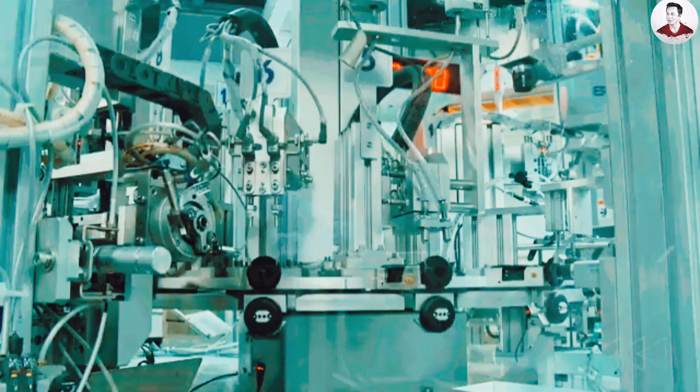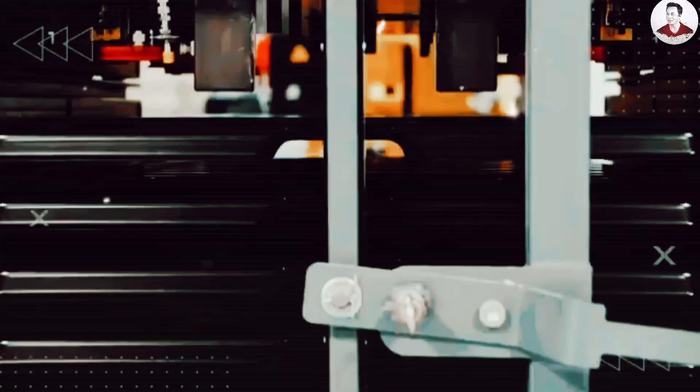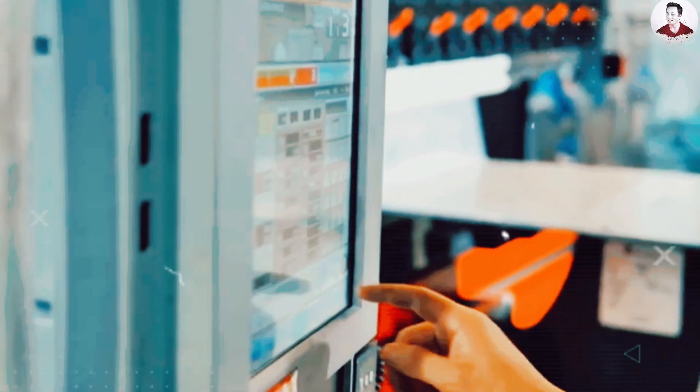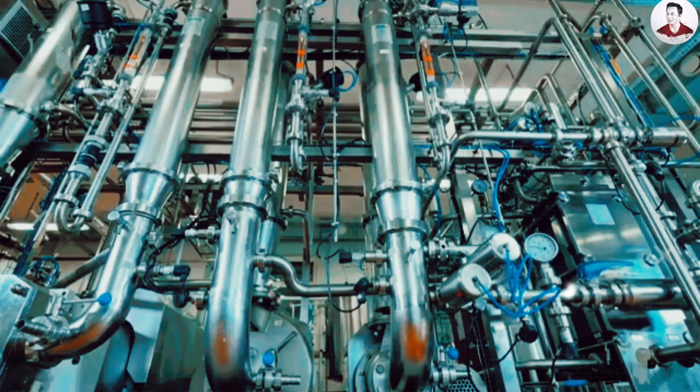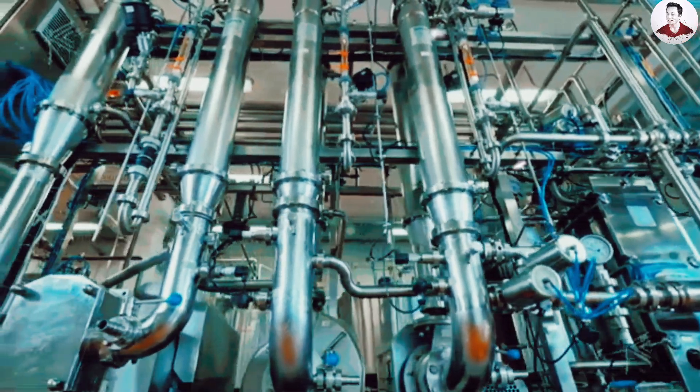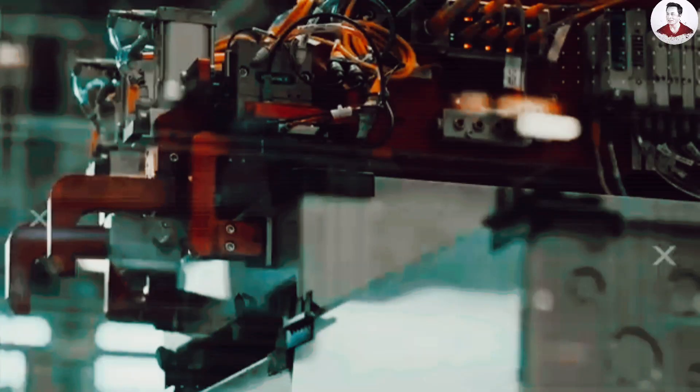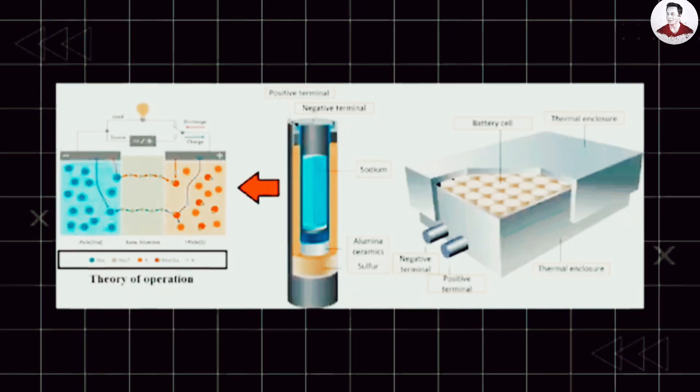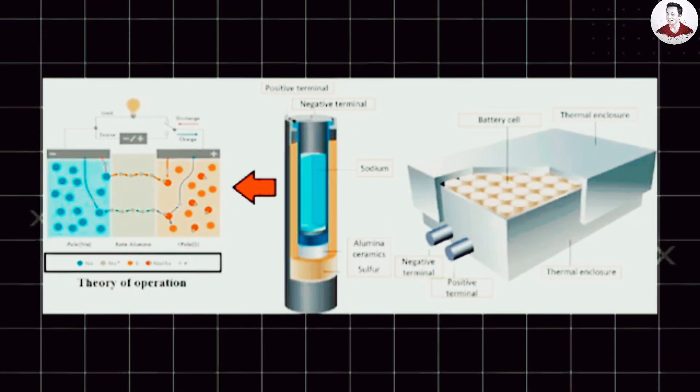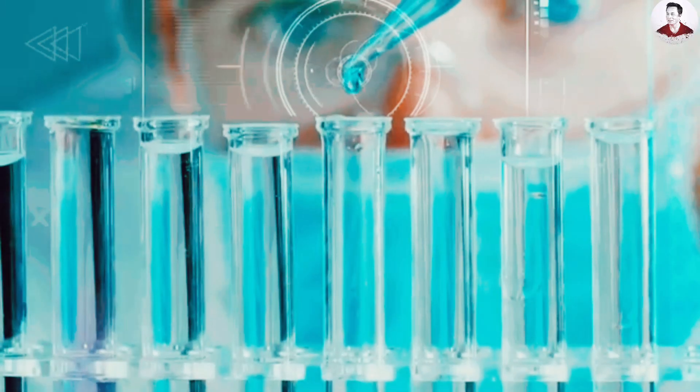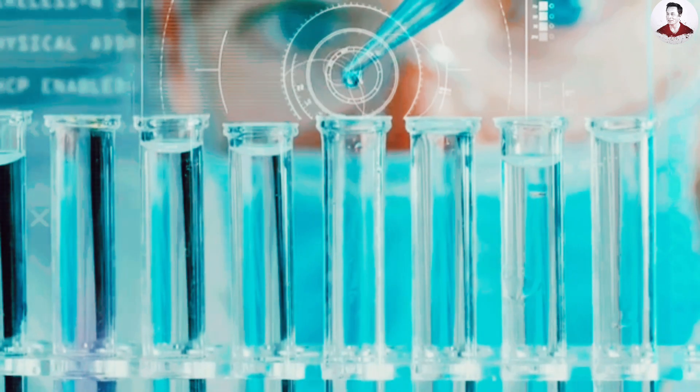Tesla Energy, the division behind Powerwall and Megapack, could also be the launchpad. Stationary energy storage is an ideal first application, given its less demanding energy density needs. And the battery's safety and stability make them perfect for long-term grid storage. But the real breakthrough might be the Model 2. With its small size, mass market focus, and manageable battery needs, it's the ideal candidate to debut sodium sulfur batteries at scale.